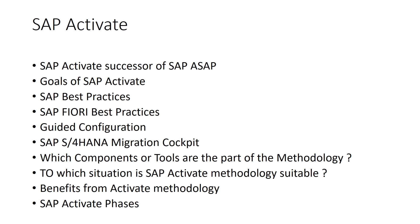SAP Activate is the successor to the former ASAP implementation method. The Accelerated SAP model was designed for SAP R/3 in the 90s and replaced and standardized traditional procedures for software implementations. The underlying concept used standardized methods to provide all customers with knowledge gained from previous projects. ASAP combined proven best practices and project management methods — a new approach at the time that could be implemented more quickly than previous procedures.